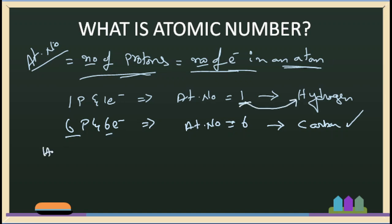Atomic number 6 — we know that is carbon. If you have a certain number of protons and electrons, that gives you a particular atomic number.